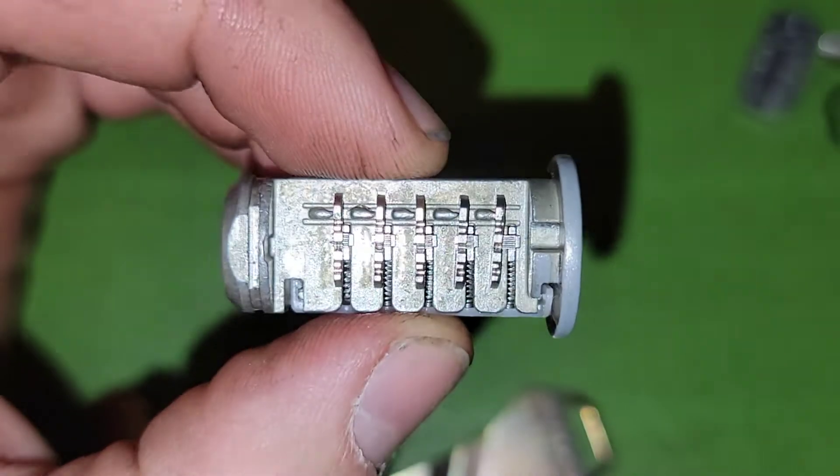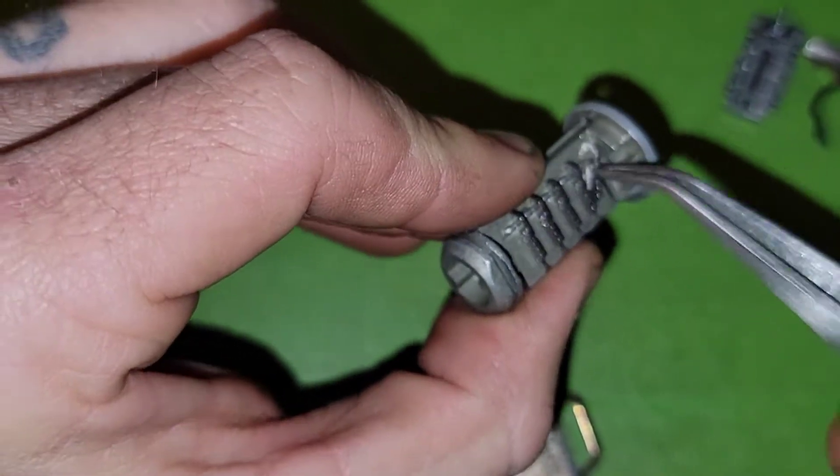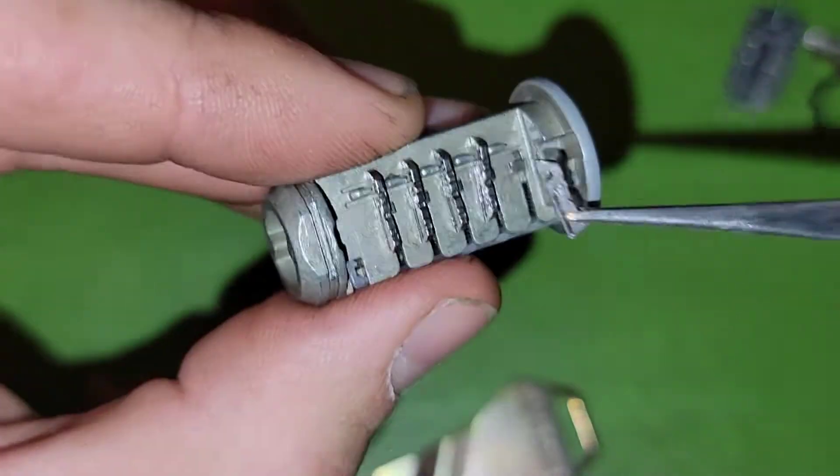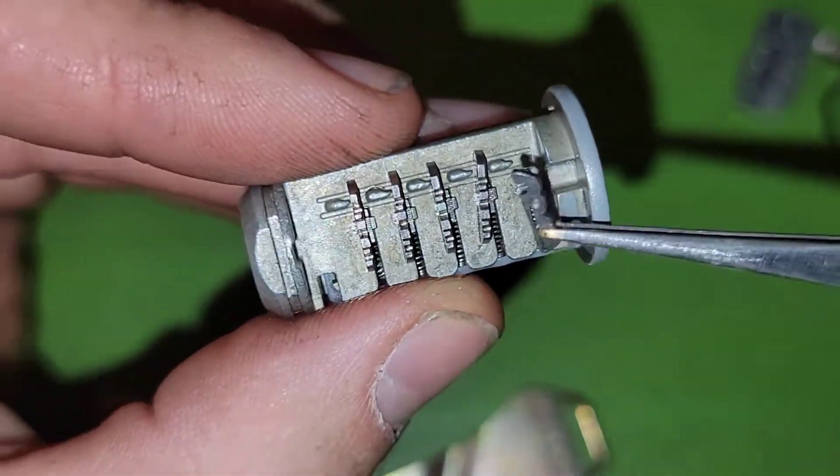Now I'm going to go ahead and tear this lock down so that we can get familiar with how it works. This works very similar to the KW1 or Kwikset keyway lock cylinder smart key technology system.